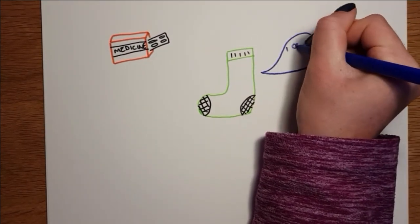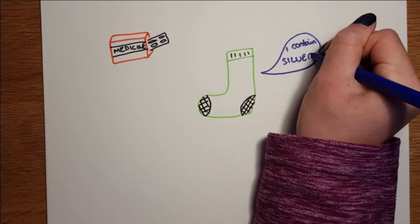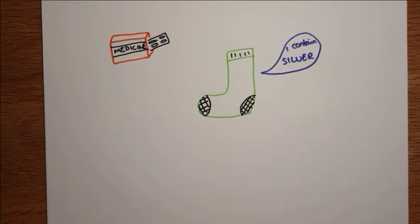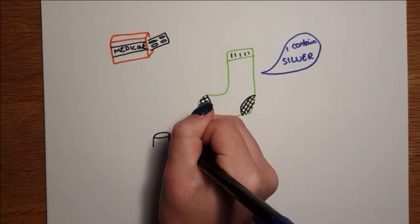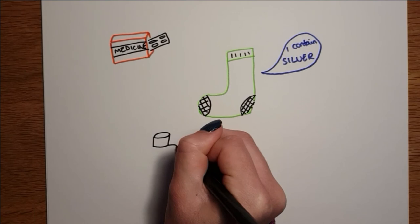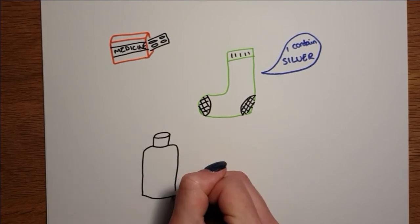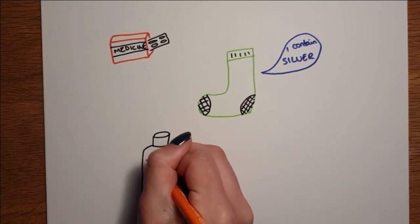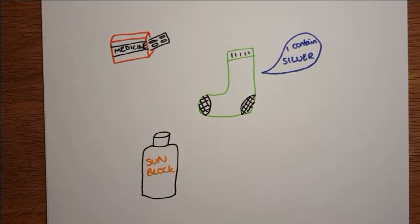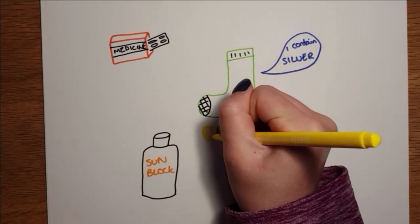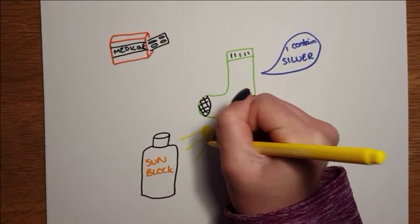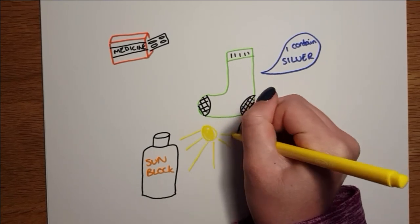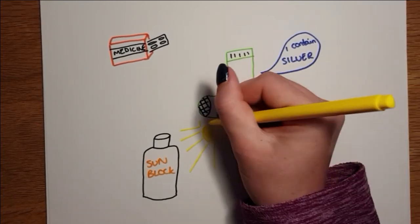Silver nanoparticles have been used in socks because of their antibacterial properties which stops the socks from smelling by killing the bacteria. Titanium dioxide nanoparticles are used in sunscreen to absorb UV radiation and gold nanoparticles have been used in red stained glass for centuries. There are so many uses for nanoparticles and the list keeps growing.